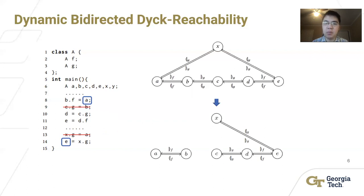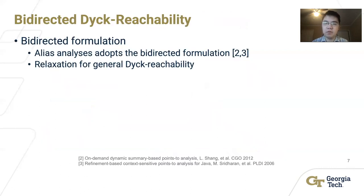Instead of recomputing the Dyck-Reachability result from scratch, it is more efficient to have a dynamic algorithm which can exploit the previous Dyck-Reachability result and maintain it over edge insertions and deletions in the graph. The Dyck formulation is an important variant of Dyck-Reachability, and can also serve as a relaxation for Dyck-Reachability to obtain better performance.